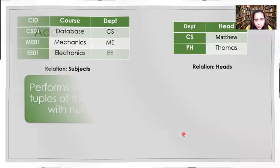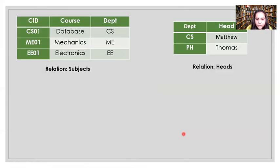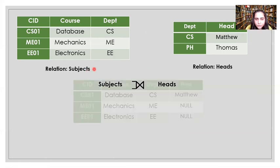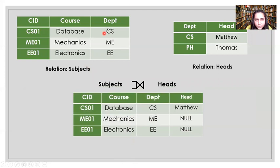Left outer join performs a natural join but also includes unmatched tuples from the left-side relation, displaying them with null values for the right-side columns. Using the same two tables, the symbol is the natural join symbol with extensions on the left side. CS matches and appears as: CS01, Database, CS, Matthew. ME and EE don't match anything in heads, so they are preserved but their head column is marked null.